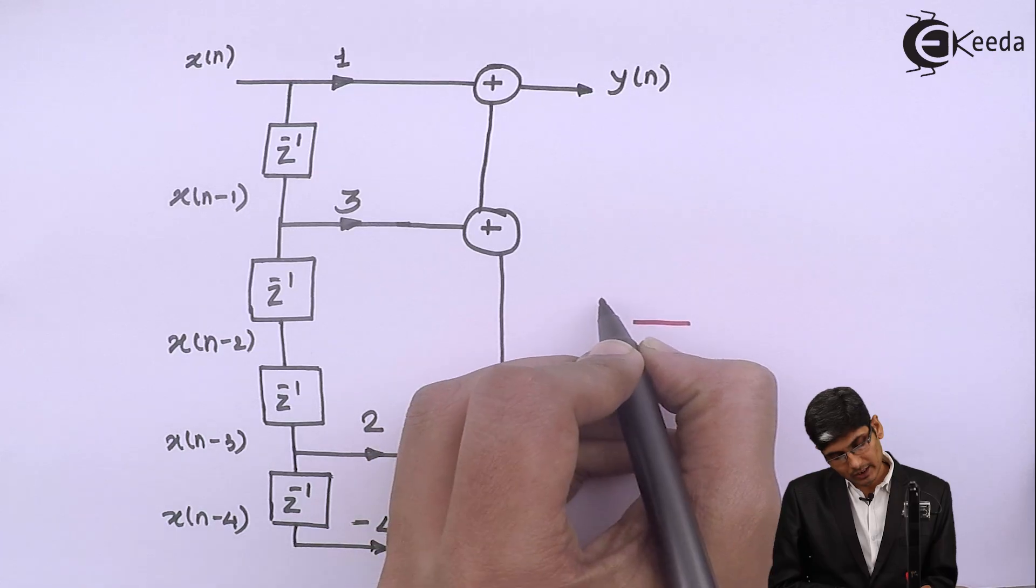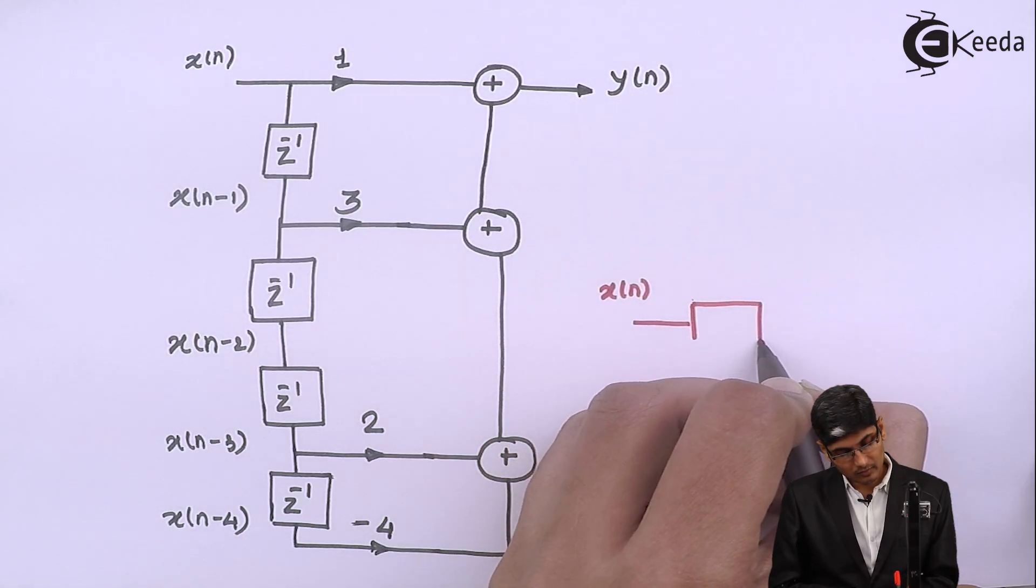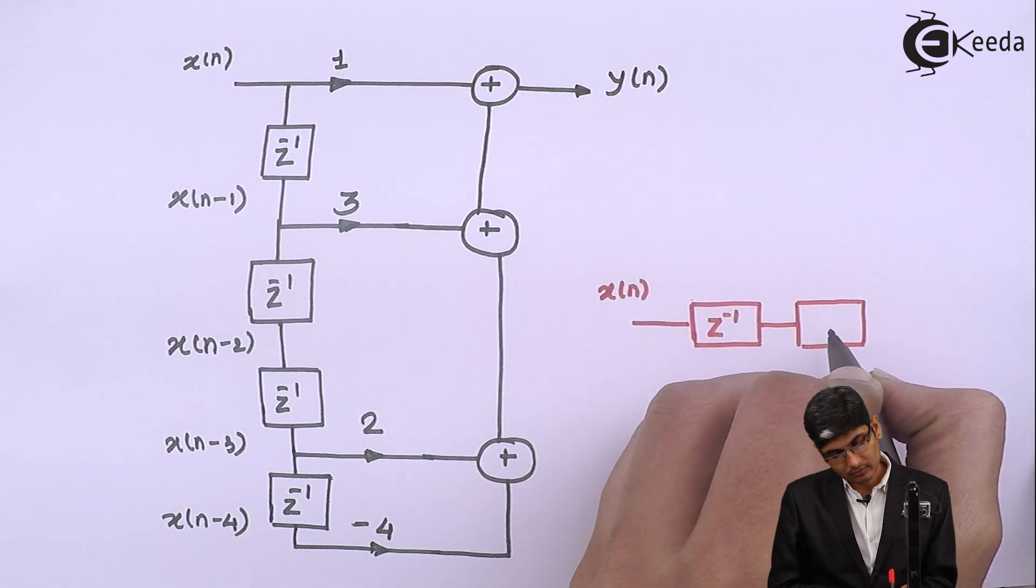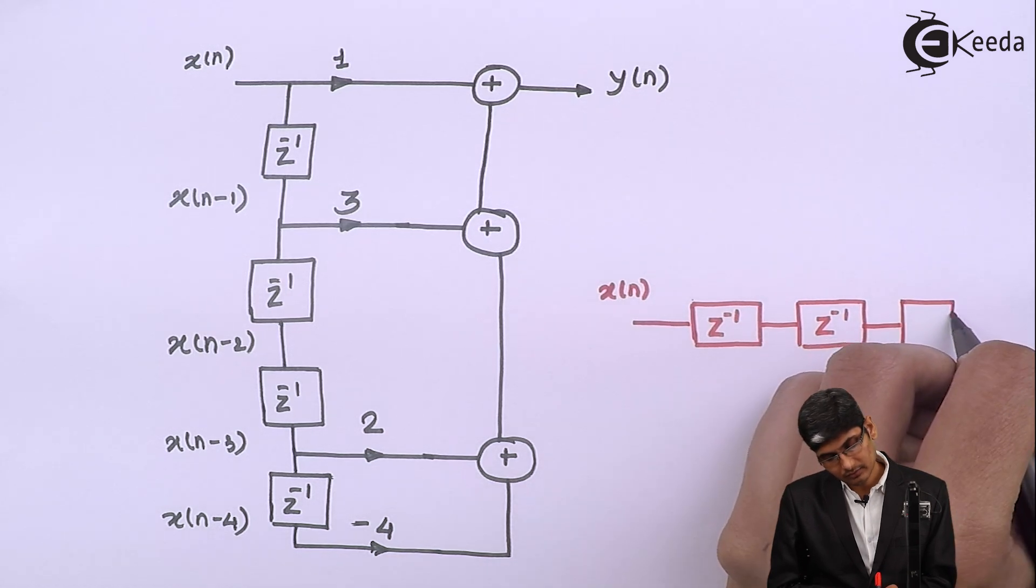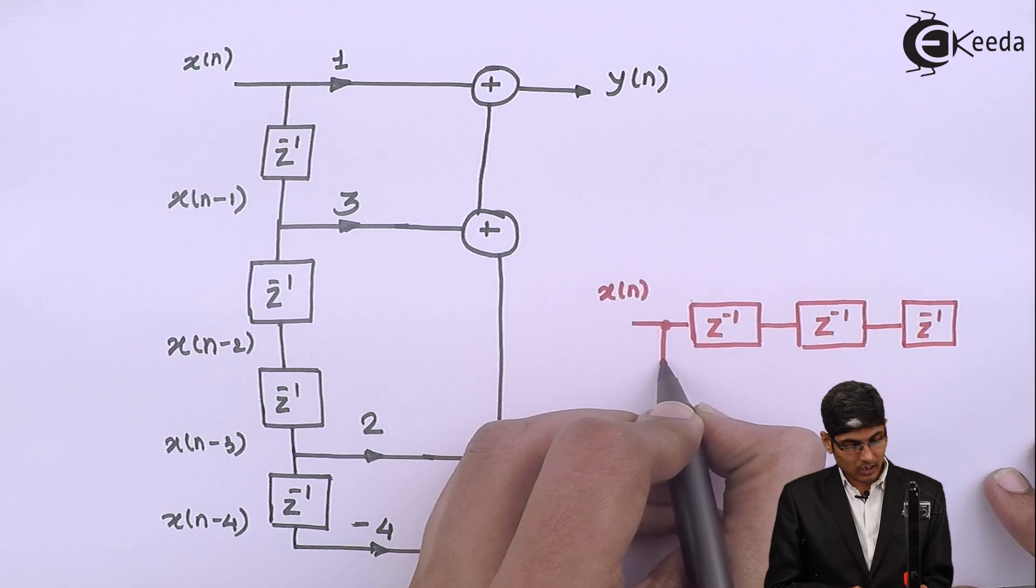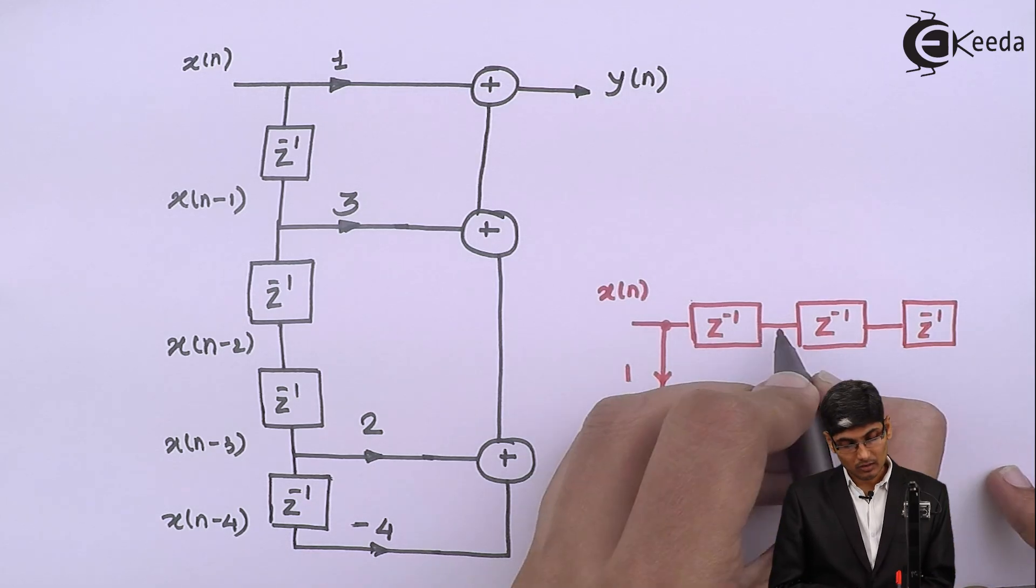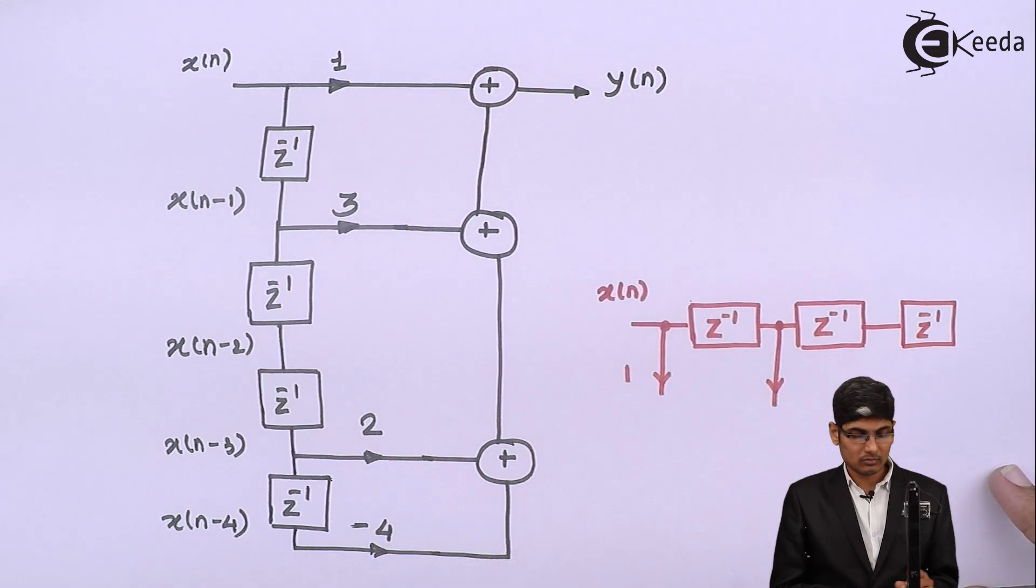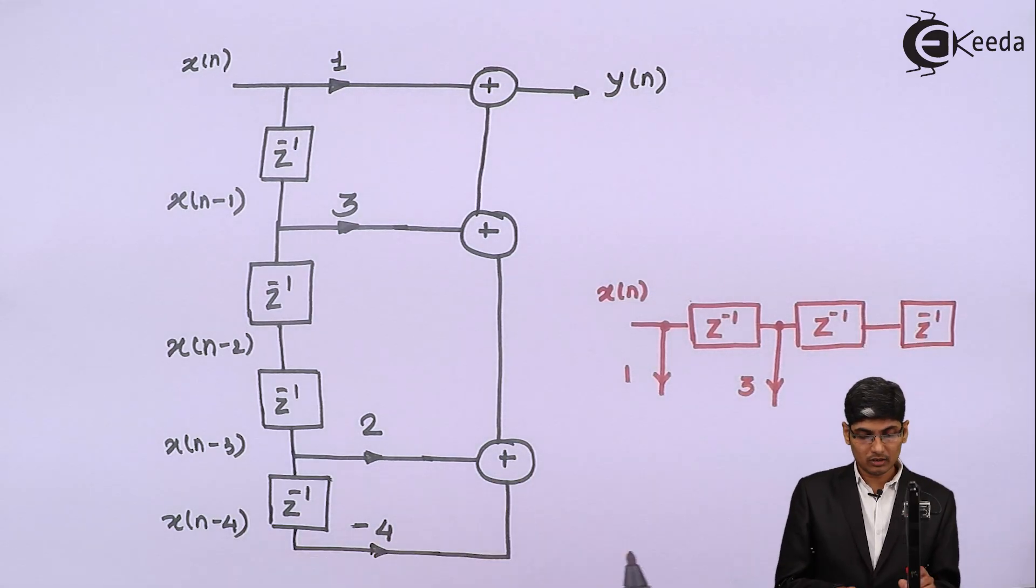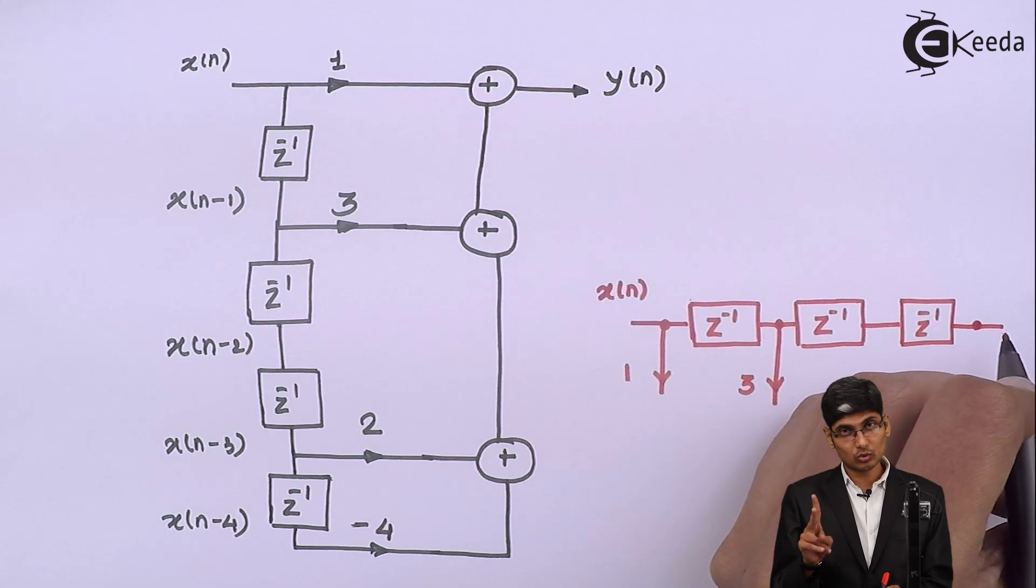We know that we are going to get X of N as my input, which I am going to delay by a factor of Z inverse, and again a factor of Z inverse, again a factor of Z inverse. Now, I am showing only till 3 points. We know we want an output from X of N which is having a multiplying factor of 1. Then we have output from X of N minus 1 and the multiplying factor is 3. We don't have anything out from here because the multiplying factor of Z raised to minus 2 is not there. That is 2 times of delay is not there.